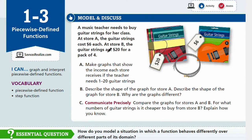So let's start with model and discuss. The key vocabulary would be piecewise-defined function and step function. A music teacher needs to buy guitar strings for her class. At store A, the guitar strings cost $6 each. At store B, the guitar strings are $20 for a pack of four.